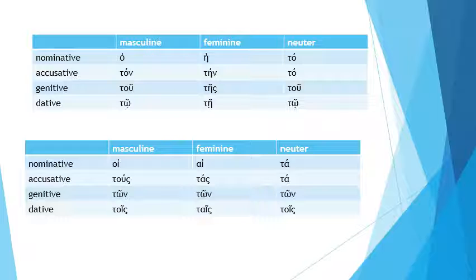I seem to have the accent wrong on the neuter — that should be an acute, just 'to.' Notice with the neuter that the nominative and the accusative are the same — that is one way we can actually spot a neuter. The nominative is the subject — the person, animal, god, or place doing the action of the verb. The accusative is the object: the person, thing, or place receiving the action. So if we had 'Bill calls Jenny,' Bill is the nominative and Jenny would be the accusative. Most of the time the accusative is used just where we would expect it to be in English.